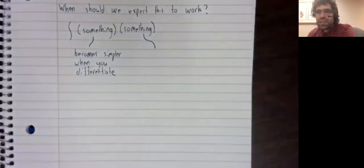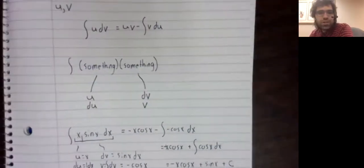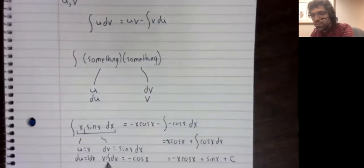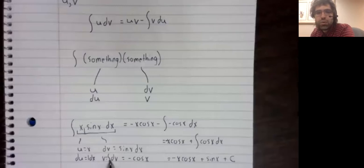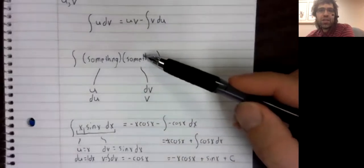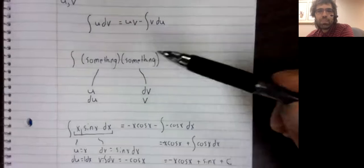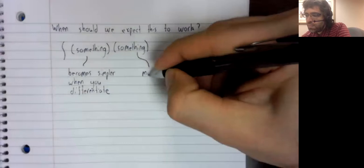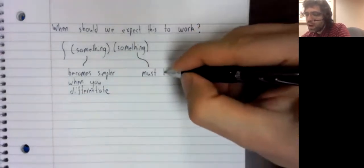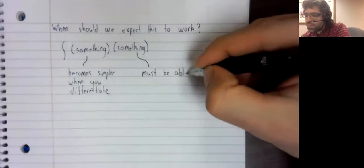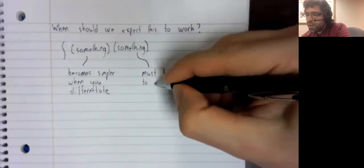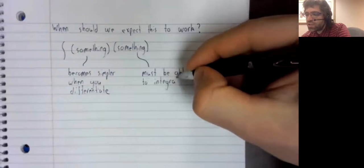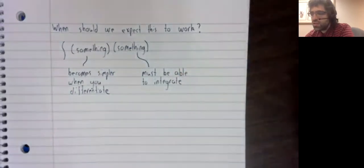What else do we need? Well, when we do integration by parts, we have to do integration. V is the integral of dV. That is to say, we have to integrate this second something. So at an absolute minimum, if this is going to work out for us, we must be able to integrate the second something.